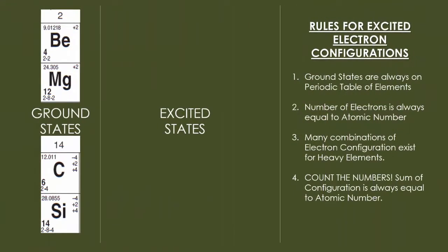Here's some rules for writing out an excited state electron configuration. The first rule, ground states are always on the periodic table of elements. The number of electrons is always equal to the atomic number, regardless of excited or ground state, and many combinations of electron configurations exist for the heavier elements. Count the numbers, the sum of the configuration is always going to be equal, again, to that atomic number.